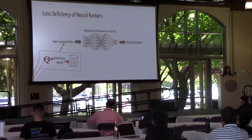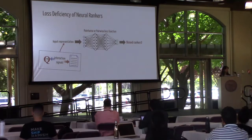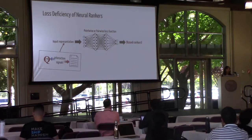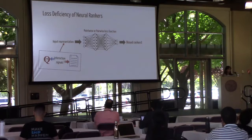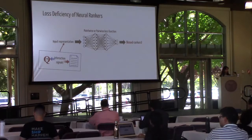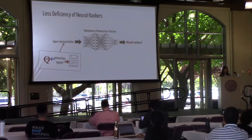For these models, when they are trained with a list-wise, pair-wise, or point-wise loss function, the obtained ranker can give an advantage to queries with more relevant documents. This is because the network cannot distinguish if two training samples belong to the same query.